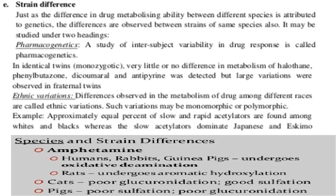This variation can be either monomorphic or polymorphic. For example, the rate of metabolism in different ethnic groups will be different. Certain people are called slow acetylators and rapid acetylators, depending upon their ethnic group. In rapid acetylators, the level of the enzyme N-acetyltransferase will be high, and therefore the acetylation process will be rapid.